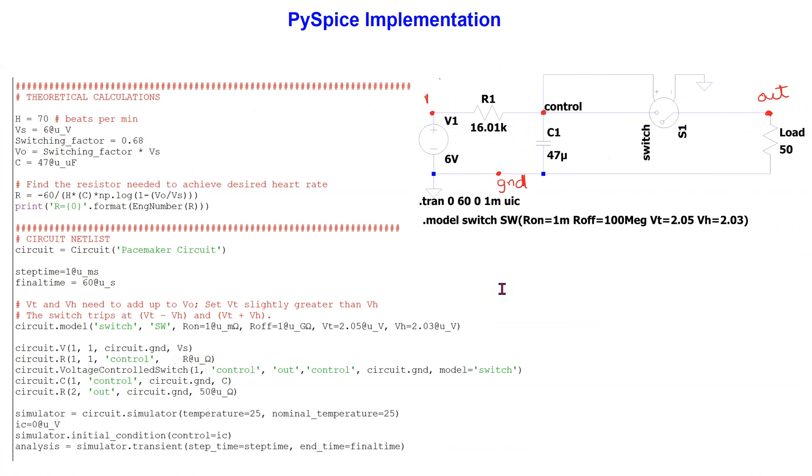We can also simulate the circuit in PySpice. By defining descriptive node labels as shown, we can transform this circuit into the netlist shown here. The model and this is shown here. We can use the circuit dot voltage control switch command to define the controller. Please pause the video now if you wish to study this code in more detail.